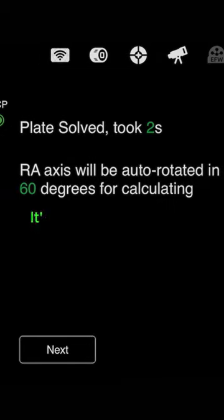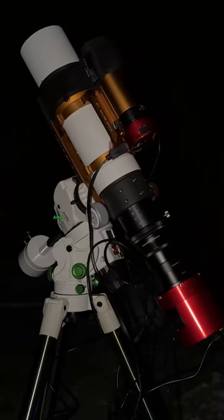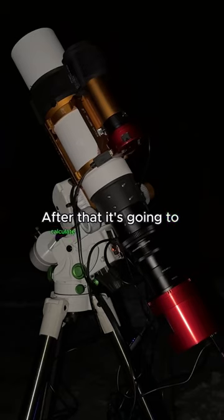When you hit next it's going to rotate the RA axis. After that it's going to calculate your total error.